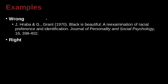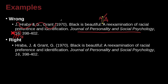J. Hraba and G. Grant — wait, there's a problem right away. 1970. 'Black is beautiful: Re-examination of racial preference and identification.' That's the article name and capitalization looks good. After a colon, you do need a capital letter — one space, no space before a colon. The journal's name is capitalized as normal. The issue number, 16, should be italicized. The problem is the name order: it should be last name first. So it's Hraba, J. and Grant, G. — last name first for every author and co-author.